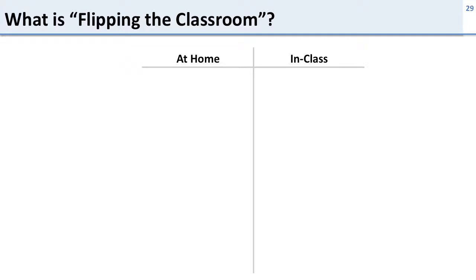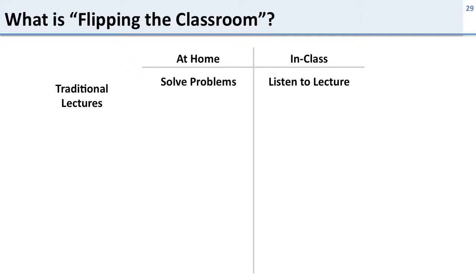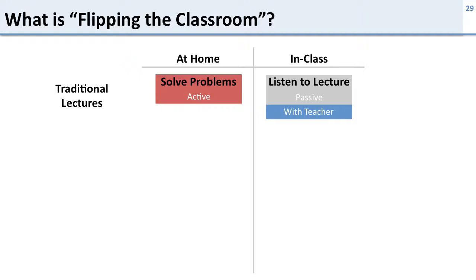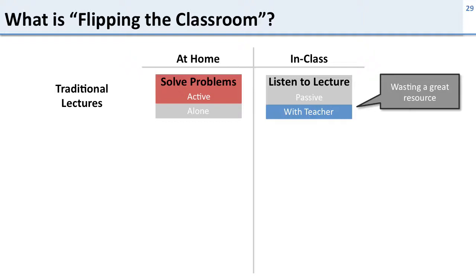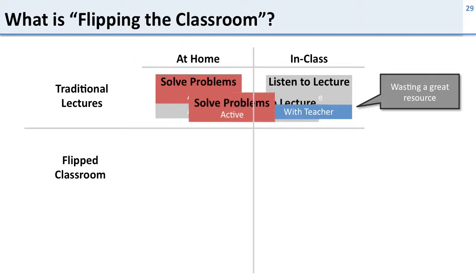So what is the flipped classroom idea? Traditionally, you come to class, listen to a lecture, then go home and work on problems or lab assignments. But listening to a lecture is passive and solving problems is active — so in the traditional model, you do the active part at home and the passive part in class with the teacher. This is a terrible waste of the teacher, who could be helping you with problems. And at home doing active learning, you don't have anyone to help you.